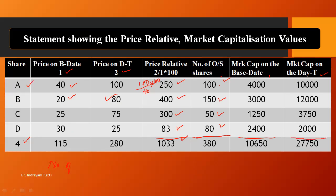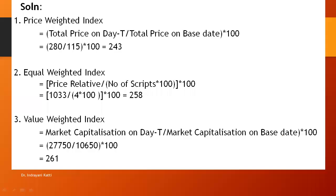We have the total calculation. Coming to the last method — the third method — which is value weighted index. We have the total values: market capitalization on the base date and market capitalization on day T. Let us look at the formula. The index value is calculated using this formula. Under the first method, that is price weighted index.